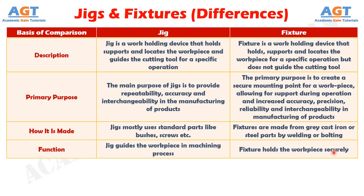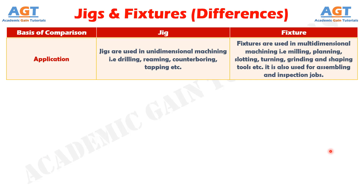If we differentiate them based on their application, jigs are used in unidimensional machining like drilling, reaming, counterboring, tapping etc. Whereas fixtures are used in multi-dimensional machining like milling, planing, slotting, turning, grinding and shaping tools etc. Fixtures are also used for assembling and inspection jobs.